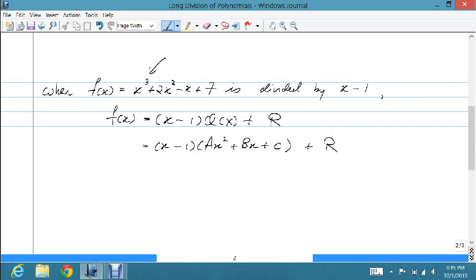In other words, the quotient is a quadratic expression. Since when I open up this bracket, I'll end up with a cubic polynomial. So we have learned earlier that we could either apply our comparing of coefficients method or by substitution to find the unknowns a, b, c, and r. Alright, but if you do that, it would be pretty tedious.